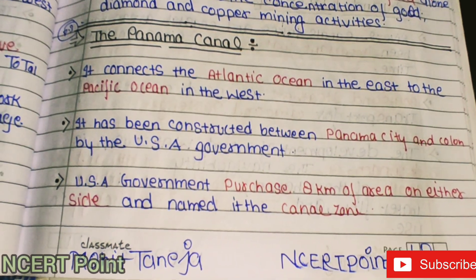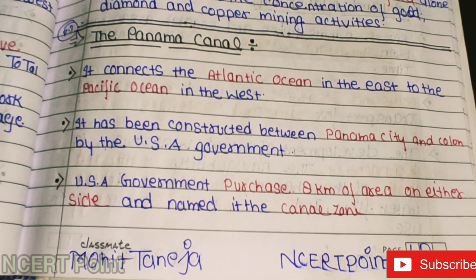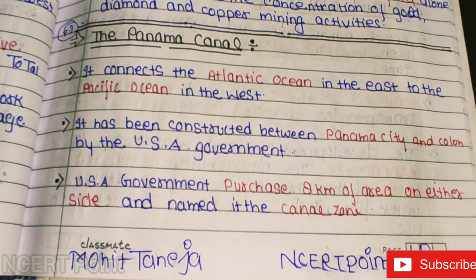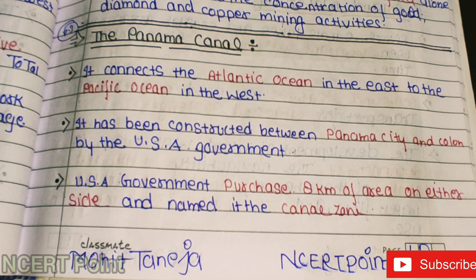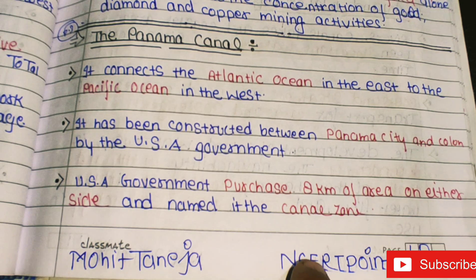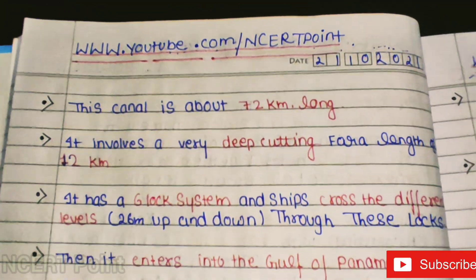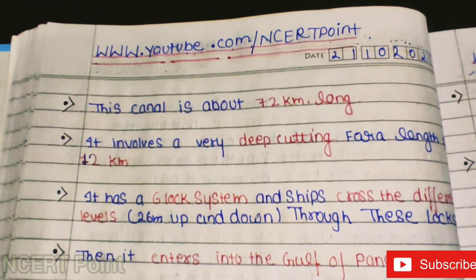The Panama Canal connects the Atlantic Ocean in the east to the Pacific Ocean in the west. It was constructed between Panama City and Colón by the USA government. The US government purchased 8 km of area on either side and named it the Canal Zone. The canal is about 72 km long.